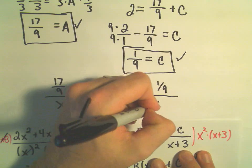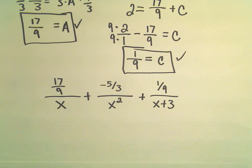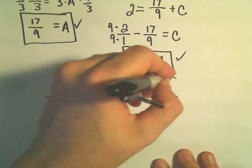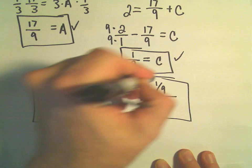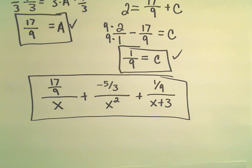And then we figured out our C value to be positive 1 ninth all over x plus 3. And this is now our partial fraction decomposition of that original rational function.